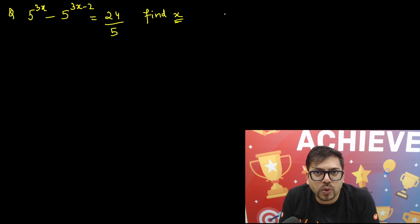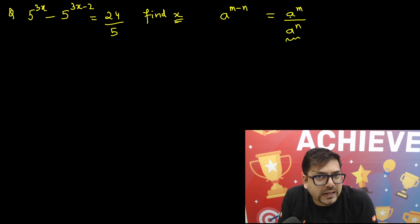First of all, we know a property that if a raised to power m minus n, then we can write it as a raised to power m divided by a raised to power n, because whenever we have a division, the power gets subtracted.